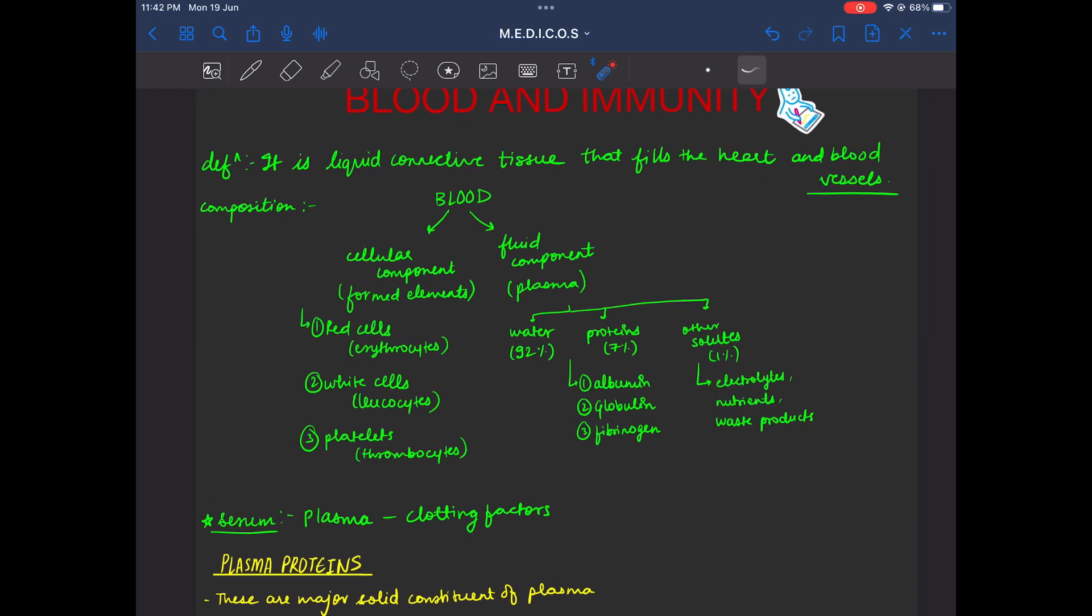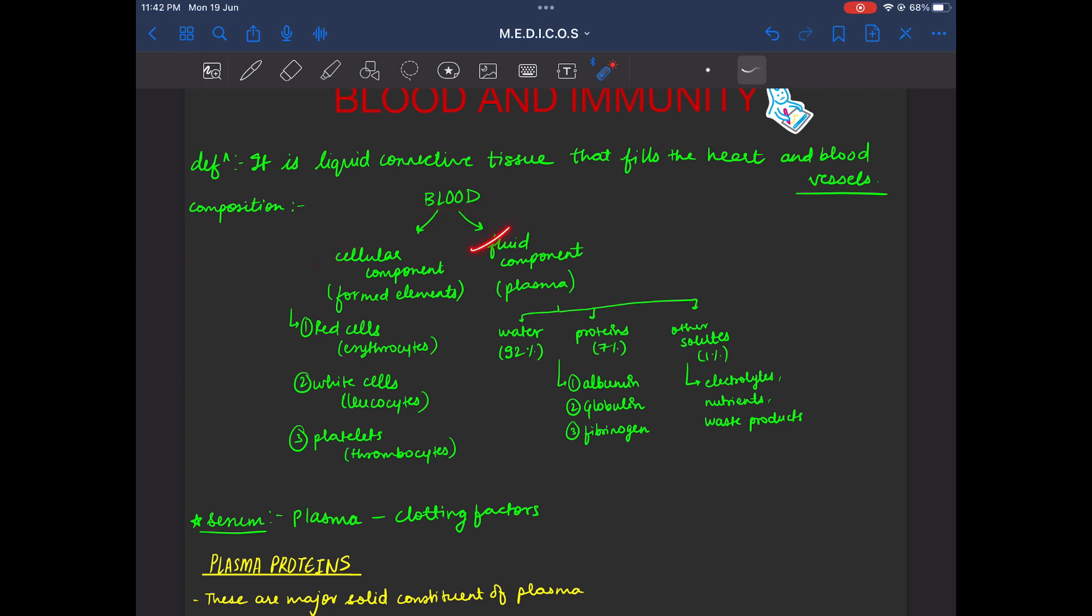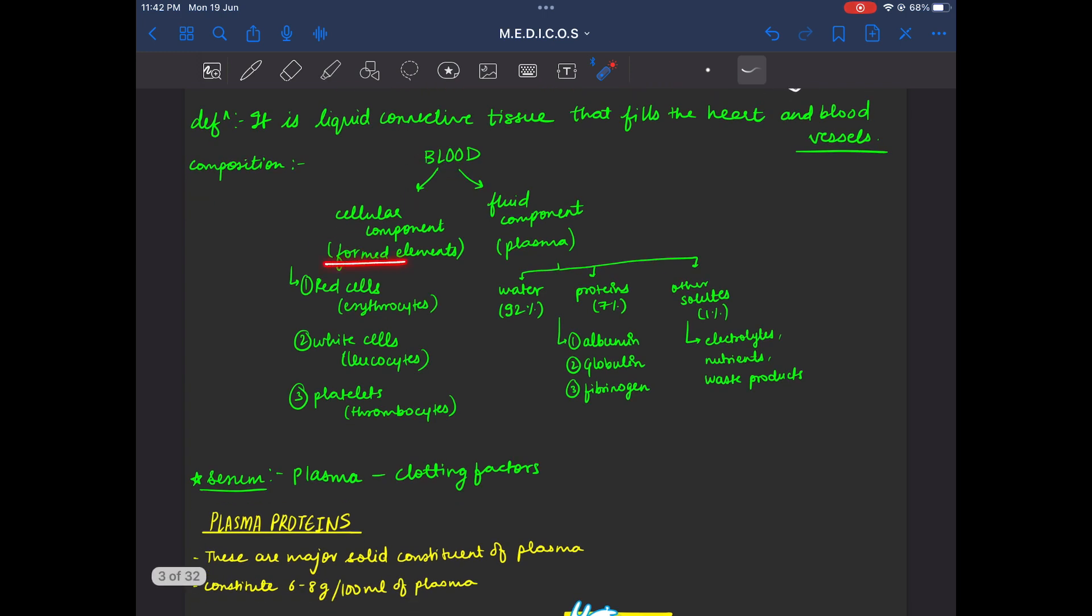What is the composition of Blood? It's a cellular component and a fluid component. Cellular components are formed elements and fluid component is plasma.